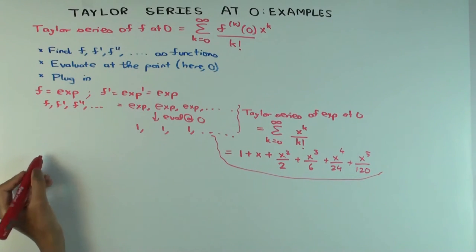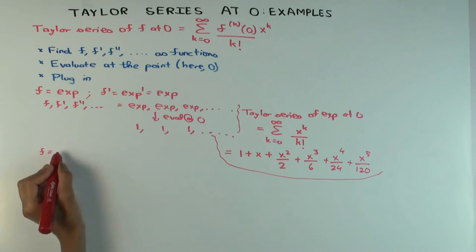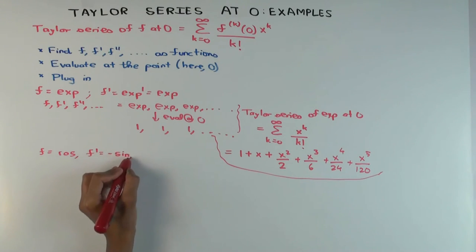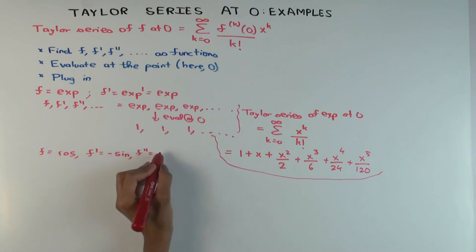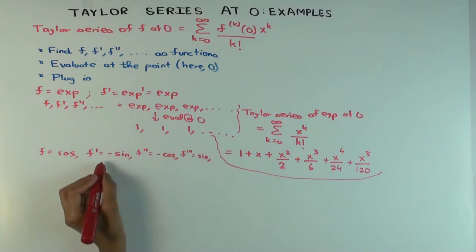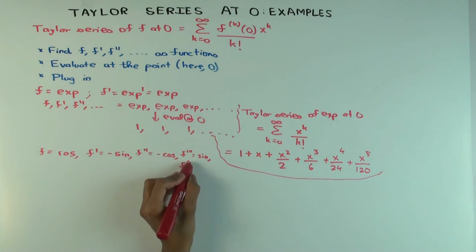Let's do the next: cosine function. F is cosine. We want to find the Taylor series of the cosine function. What's F prime? Negative sine. F double prime is negative cosine. F triple prime is sine. And the fourth derivative is cosine.